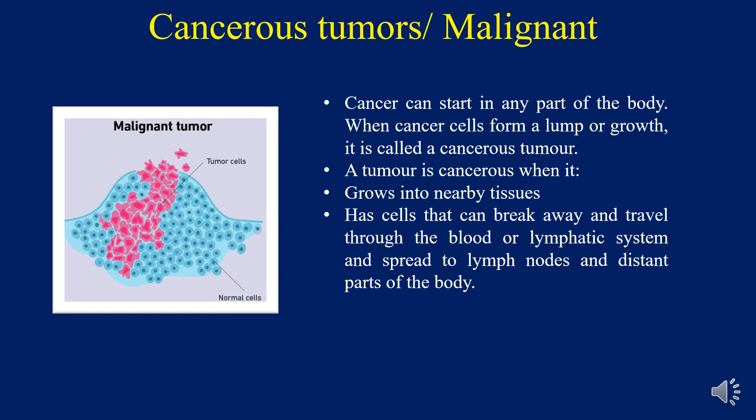The second type is cancerous tumors. Tumors are malignant, and cancer can start in any part of the body. When cancer cells form a lump or growth, it is called a cancerous tumor. A tumor is cancerous when it grows into nearby tissues and has cells that can break away and travel through the blood or lymphatic system and spread to lymph nodes and distant parts of the body. The cancer that spreads from the first place it started, called the primary tumor, to a new part of the body is called metastatic cancer. When cancer cells spread and develop into new tumors, the new tumors are called metastases.